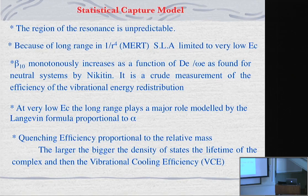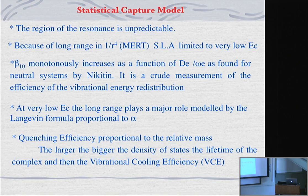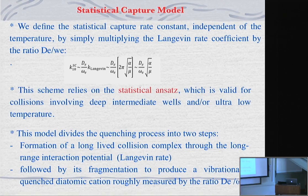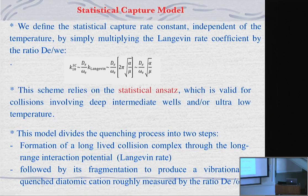At very low collision energy, the long range plays an important role, modeled by the Langevin formula proportional to the polarizability and the relative mass. We define what we call a statistical capture rate constant. If you look at all papers of Ferguson, you will see that he made the same hypothesis of splitting the process into two steps.